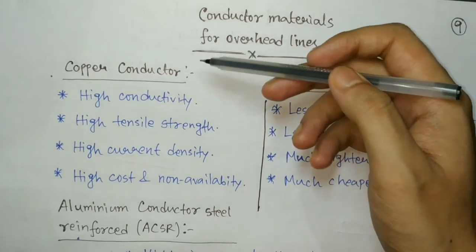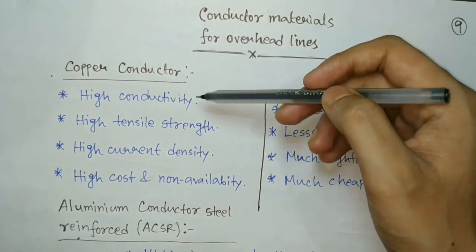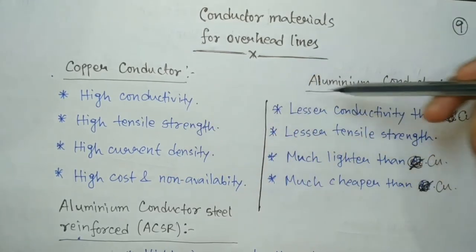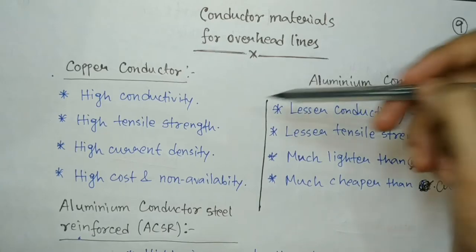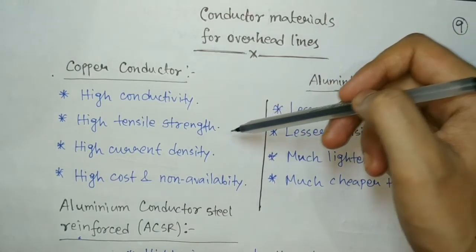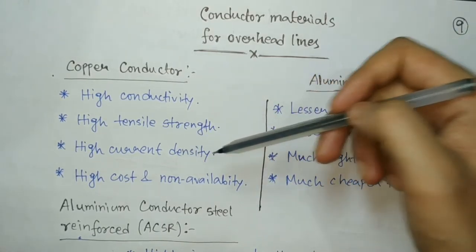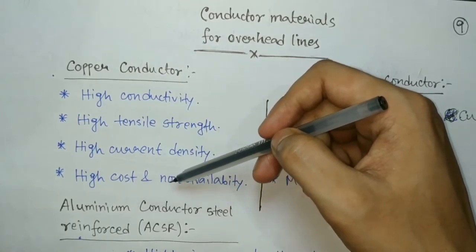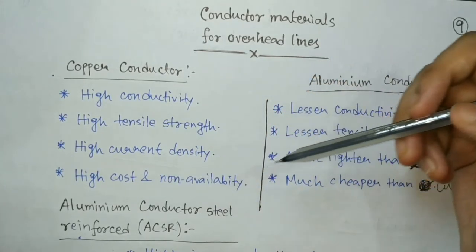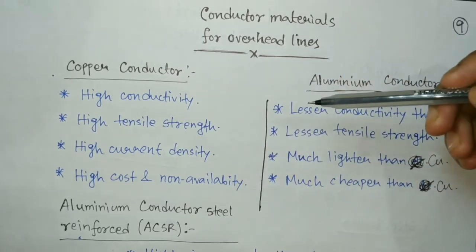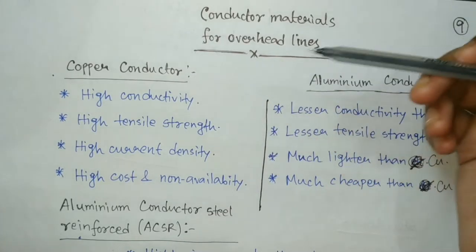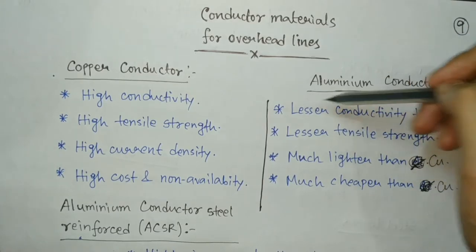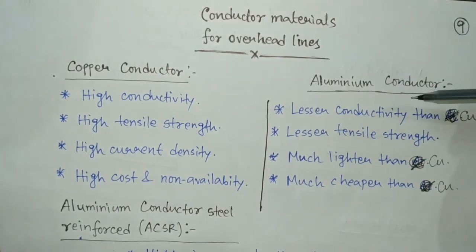First is the copper conductor. It has very high conductivity — actually the highest conductivity among these three types. It also has very high tensile strength and high current density. But unfortunately it is very costly and has a problem of non-availability, which is why nowadays copper conductors are no more used in long transmissions.